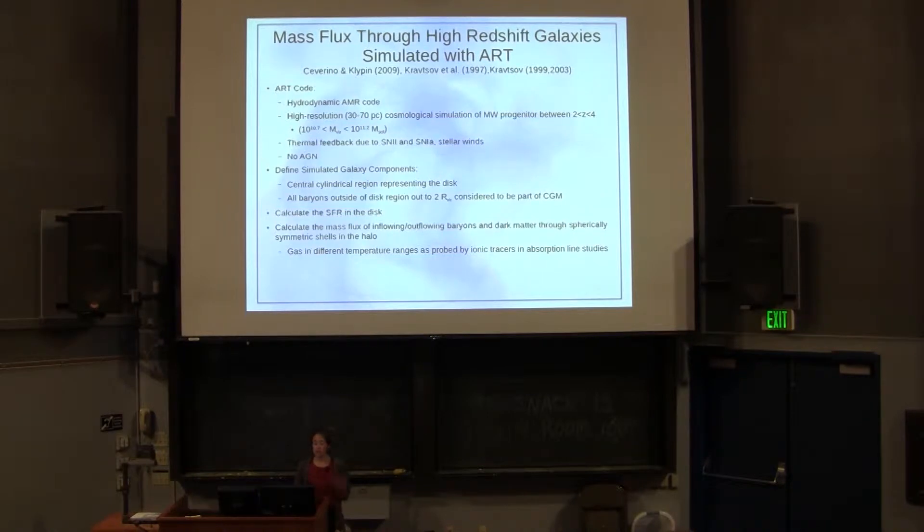We took our Milky Way progenitors and clearly defined the two components. We separated out a disk component by defining a central cylindrical region that represented the ISM of the disk, and everything out to two virial radii beyond this disk was taken to be part of the CGM. Then we calculated the star formation rate in the disk and the mass accretion rate through spherically asymmetric shells through the halo. We split our gas into different temperature ranges that are roughly representative of the phases of gas probed by different ionic species in absorption line studies, like magnesium 2, silicon, and carbon 4.